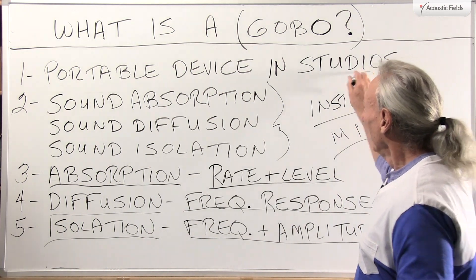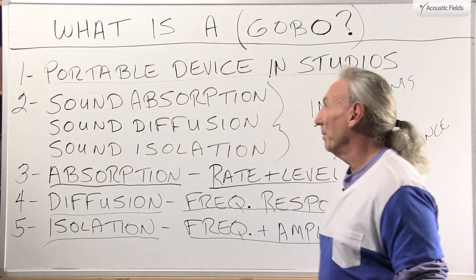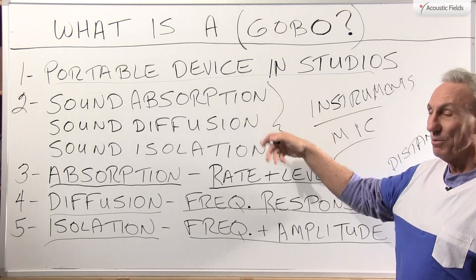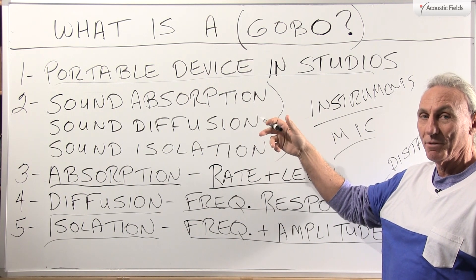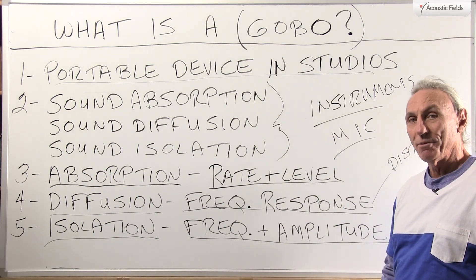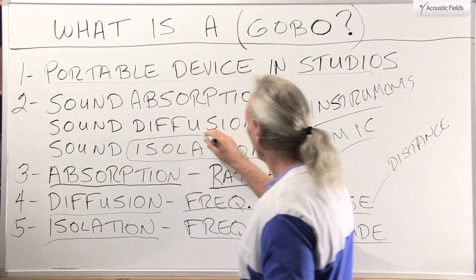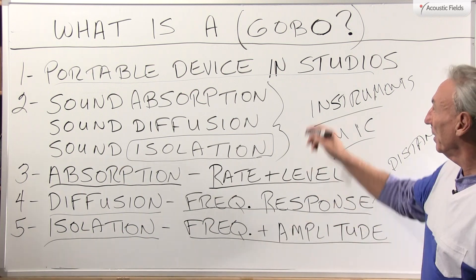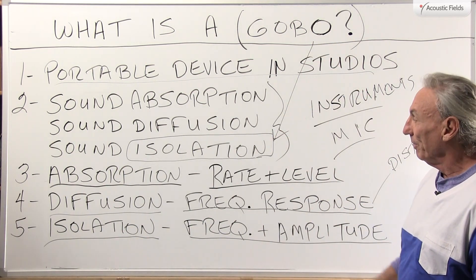When we look at the literature and talk to people about it, it's a device in studios that has three functions, from looking at most of the studios I visited in Los Angeles: sound absorption, sound diffusion, and sound isolation. I think this last feature is probably the most critical and is usually associated with the word gobo.